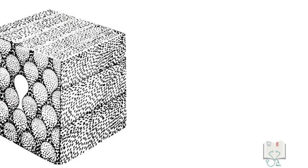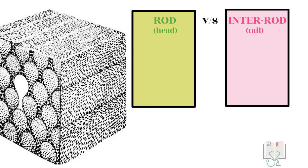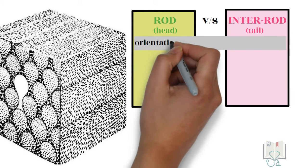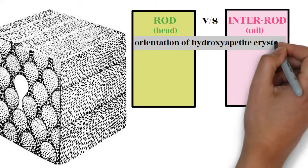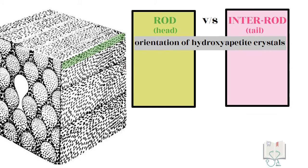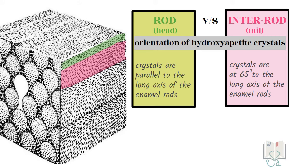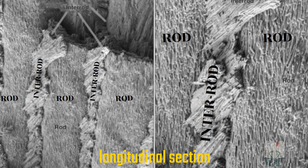The only difference between rod and inter-rod or head and tail area is the orientation of the hydroxyapatite crystals within them. In head part of the rod, the hydroxyapatite crystals are parallel to the long axis of the rod. In the tail part, the hydroxyapatite crystals are at 65 degrees to the long axis. This change in angulation can be clearly seen in the longitudinal section.